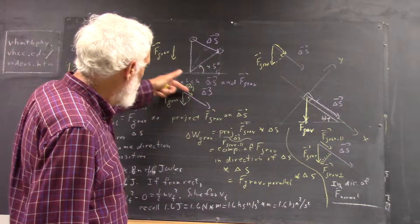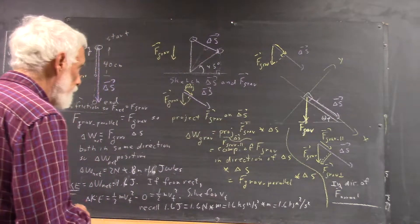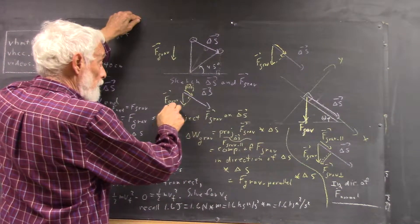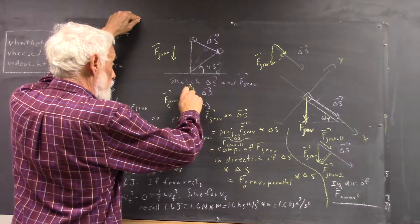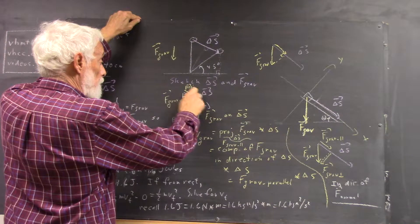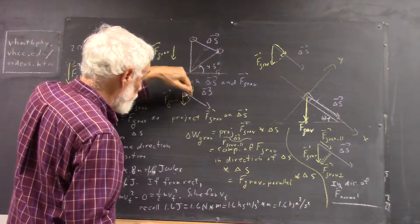To find the parallel component of F_grav, multiply the magnitude of F_grav by the cosine of this angle. This is a right triangle; your projection line goes at a right angle.